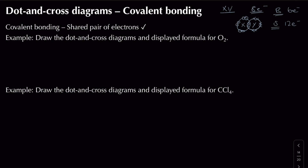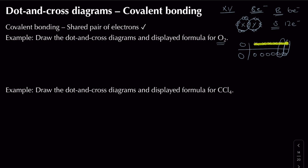For the first example, we need to draw a dot and cross diagram and the displayed formula for oxygen (O₂). I draw a table showing each oxygen atom's electrons — oxygen is in group 6 so it has 6 electrons in its outer shell. I can form one shared pair, which gives each oxygen 7 electrons. That's still not enough.